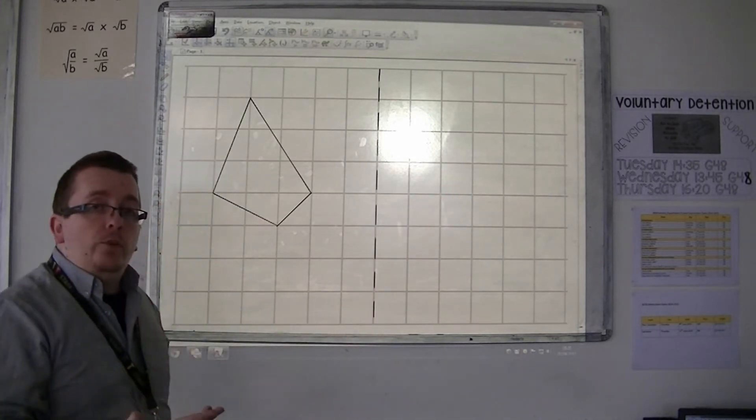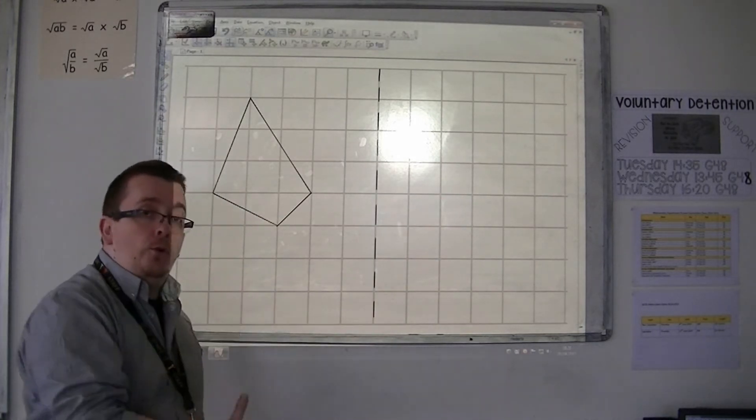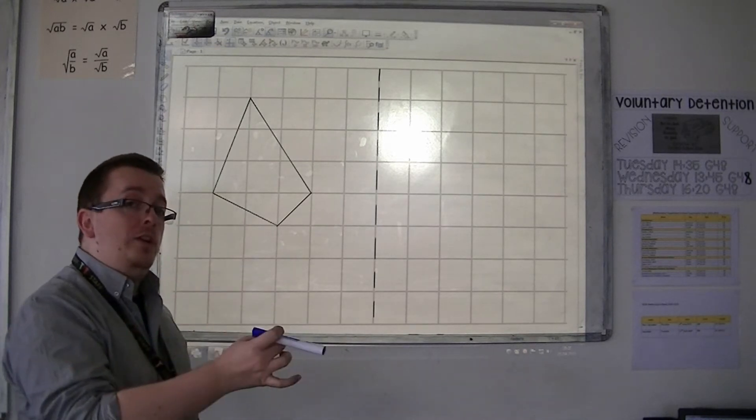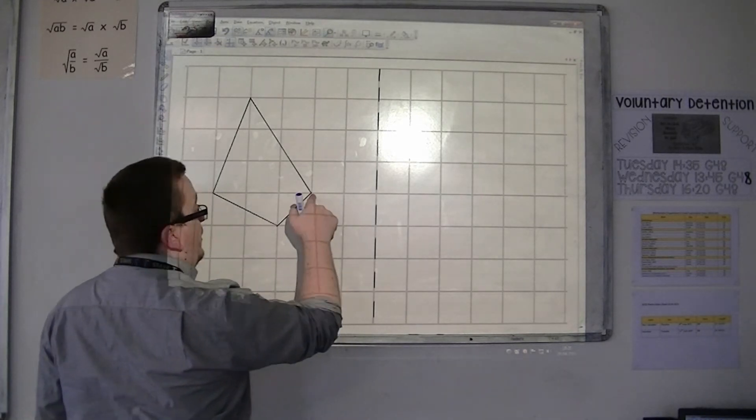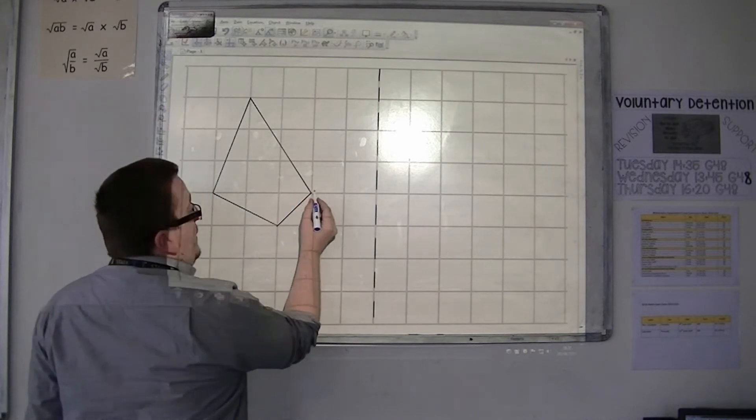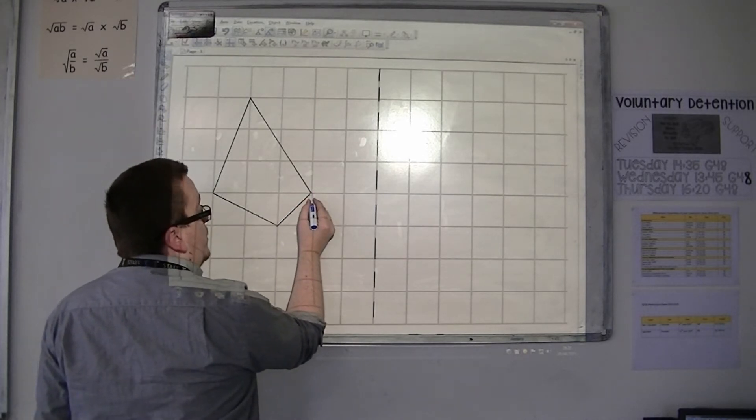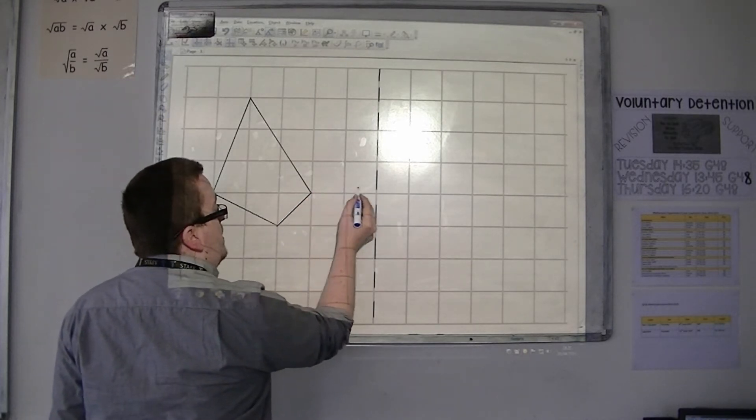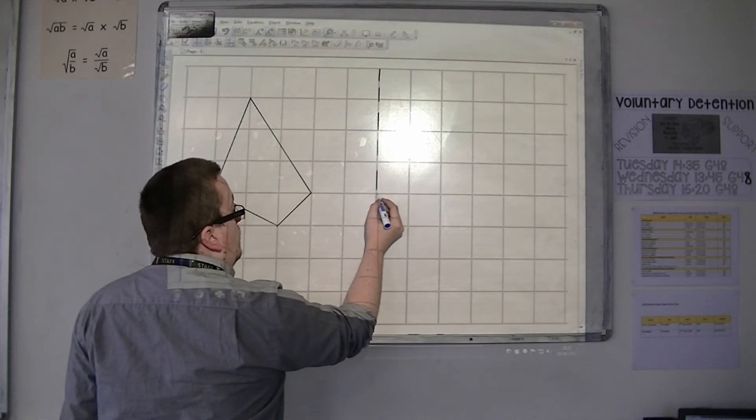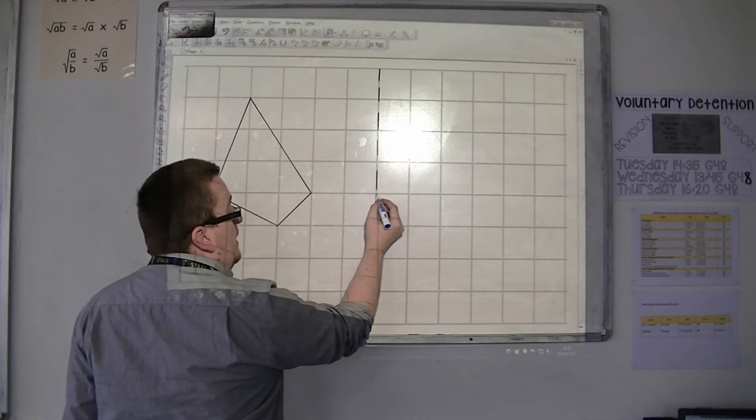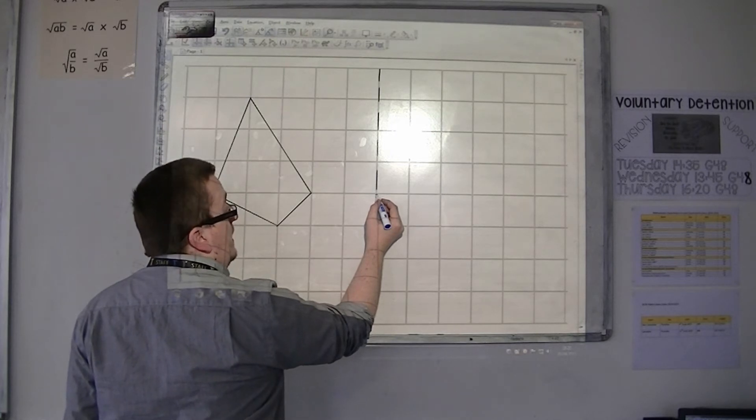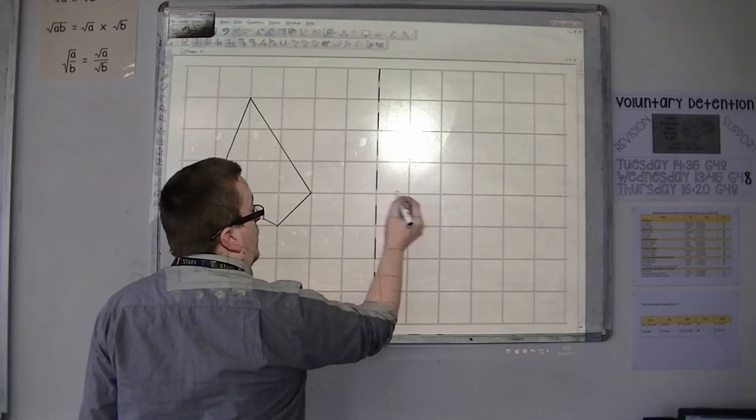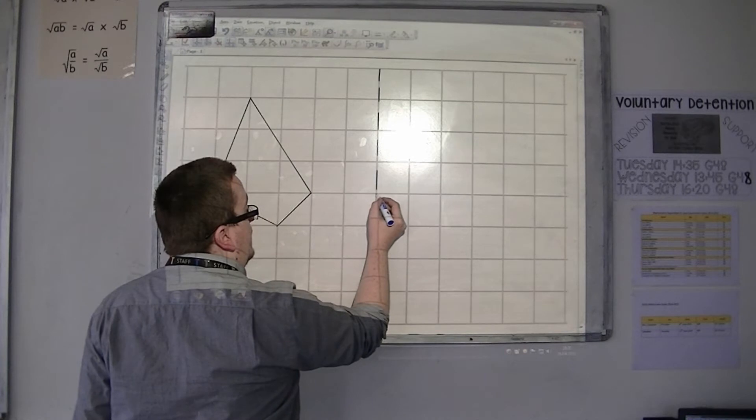And what you can do is you can take each of the corners of the shape individually. So, for example, starting with this corner, and then see how far that point is away from the mirror line. And then, well, that point's reflection must be the same distance away into the mirror. So, it's one, two into the mirror.